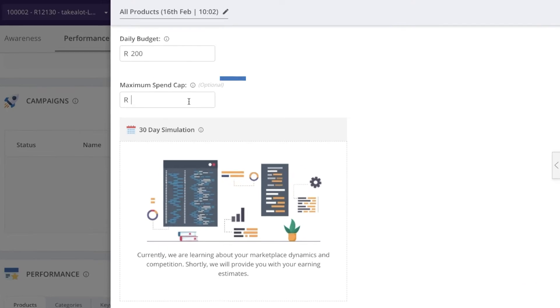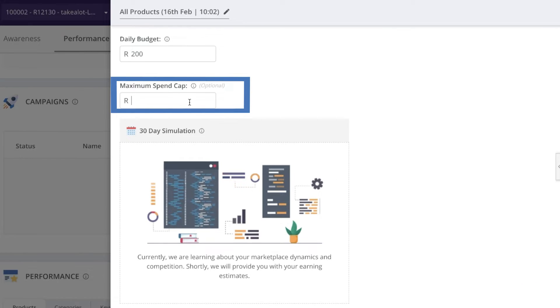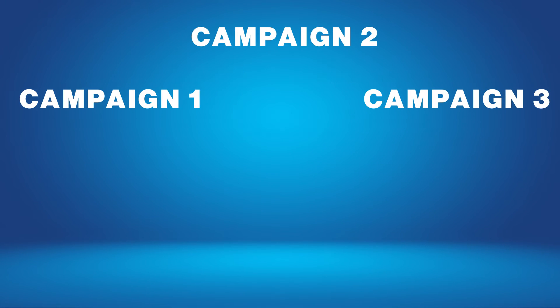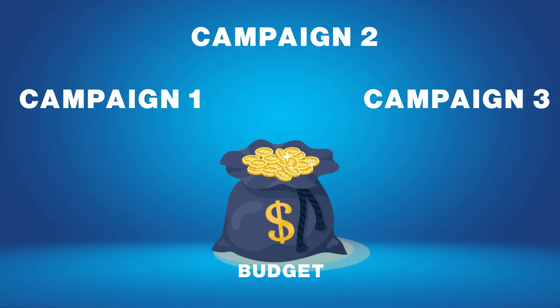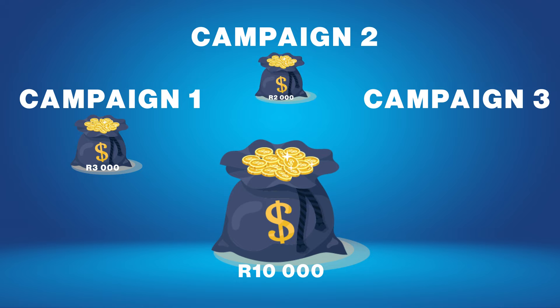The next section is optional — it's the maximum spend cap. This is the amount that the campaign will spend in its entirety, so if you set an amount here, for example one thousand Rand because that's what you've got in your wallet, the campaign will actually stop when it hits one thousand Rand. This should generally be used if you have multiple campaigns with one big budget — for example, a ten thousand Rand budget split across three campaigns: set one at three thousand, one at two thousand, and one at five thousand. It ensures that one campaign doesn't eat into the budget of another.